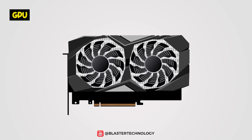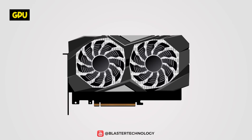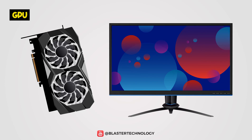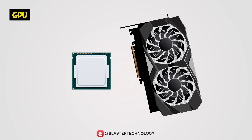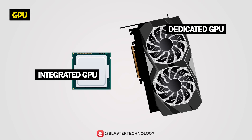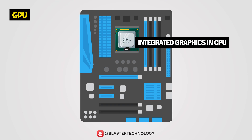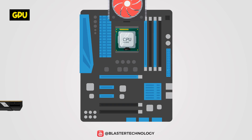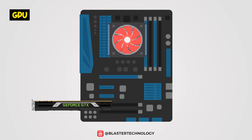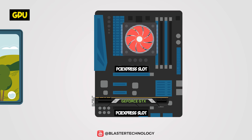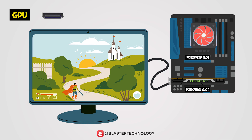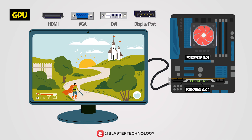The graphics processing unit, or simply the video card, is the component responsible for playing back images on the monitor and the main component for playing video games. There are two types of graphics cards: integrated and dedicated. The integrated ones are integrated in a processor and share the processor's memory, which makes them less efficient. Instead, the dedicated one is connected to the motherboard via a PCI Express slot and sends the information to the monitor via an HDMI, VGA, DVI, or DisplayPort connector.